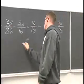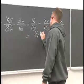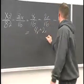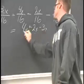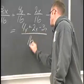We can simplify this a little bit by putting 4x plus 2x minus 3x all over 16.